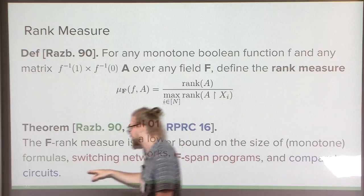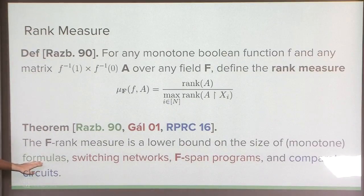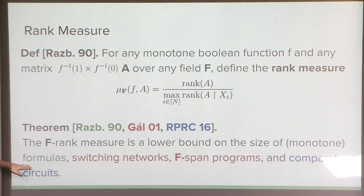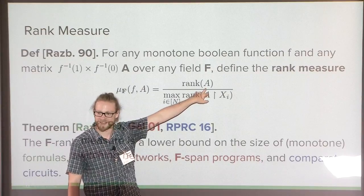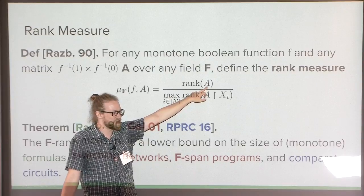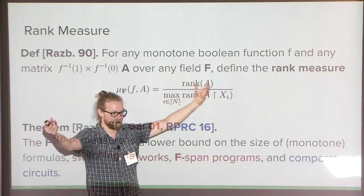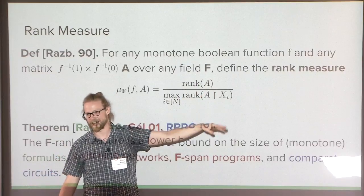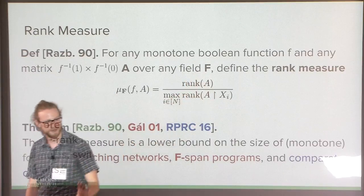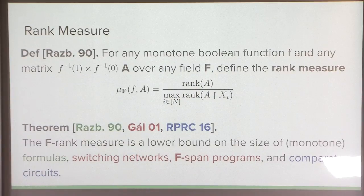Why should this be true? For formula size, a formula in the communication world gives a tiling of the underlying matrix — a monochromatic tiling. That gives a partition of A. Ultimately it boils down to sub-additivity of rank: if you take rank on both sides and rank is sub-additive, you can take the maximum rank and drag it out, giving you the number of rectangles in your tiling.